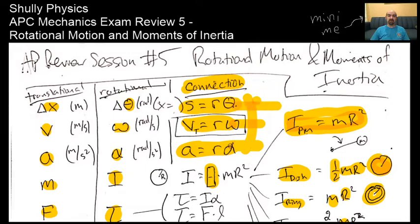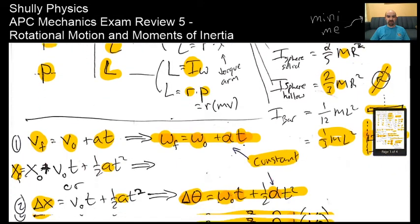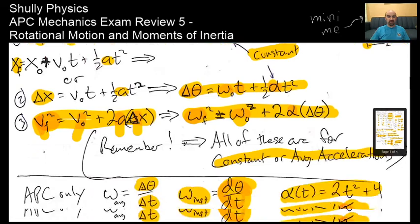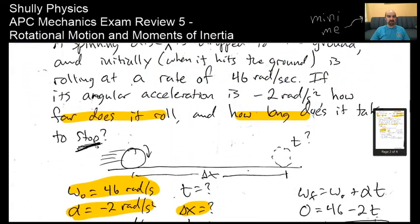The middle expression v equals r omega is the only one actually on the AP exam equation sheet, so do please remember s equals r theta and a equals r alpha as well. Super important—always keep those ready to use. We're going to need them to solve this problem.